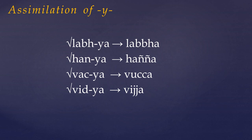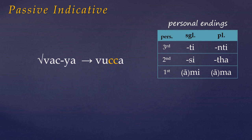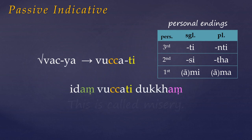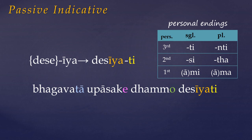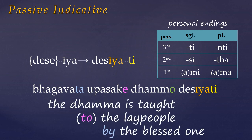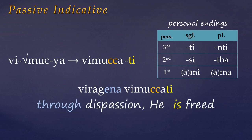By now you know that these are just bases, which then have to be inflected to agree with their subject. So to create the present passive, we simply add the present tense personal endings. Being passive, any agent is placed in the instrumental case. For example: 'The Dhamma is taught to the lay people by the Blessed One.' But it's actually quite common for no agent to be expressed, creating an indefinite or impersonal sense — as in: 'Through dispassion, he is freed.'